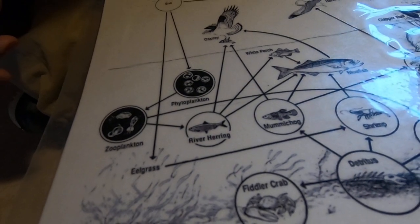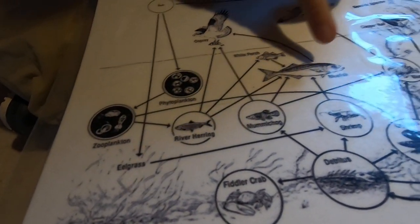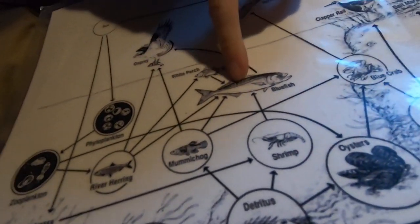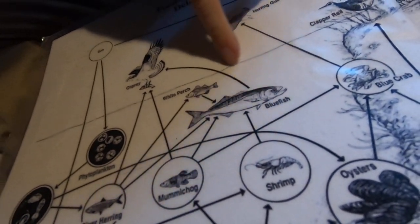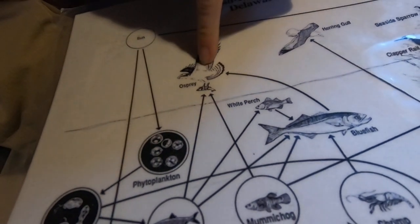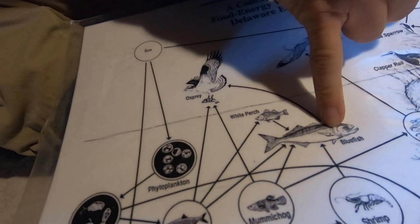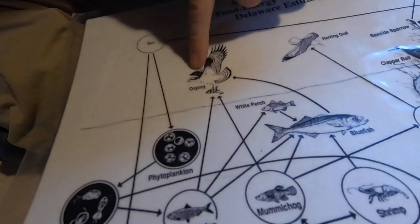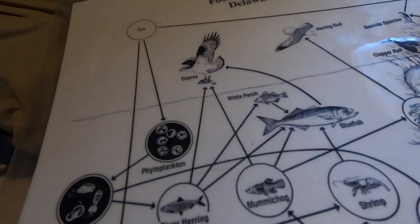Then you'll have things like your tertiary consumers like this bluefish and this osprey. Now this osprey is above the bluefish because he might in fact eat the bluefish, making him in this instance a quaternary consumer.